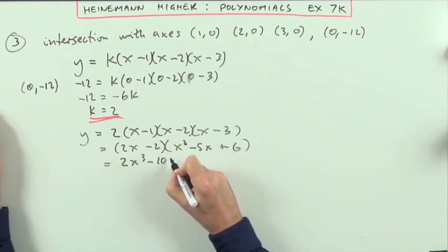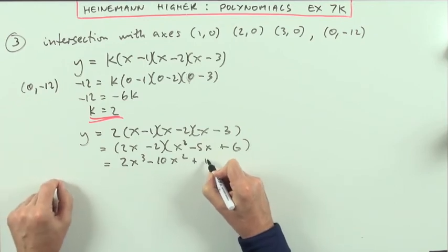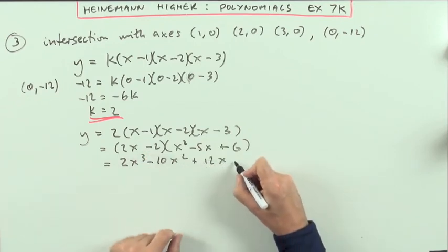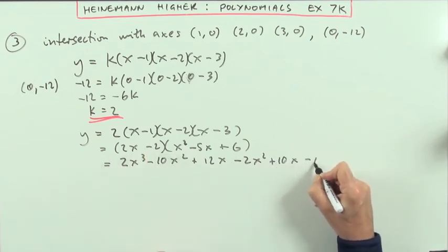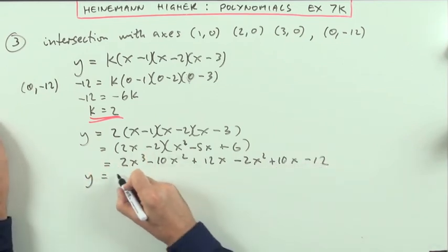So I've got 2x cubed minus 10x squared plus 12x, and then the negative 2, negative 2x squared plus 10x minus 12.